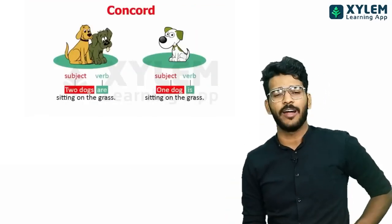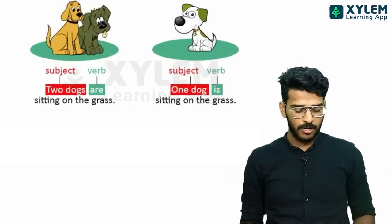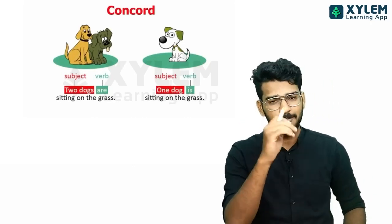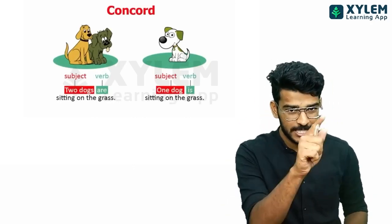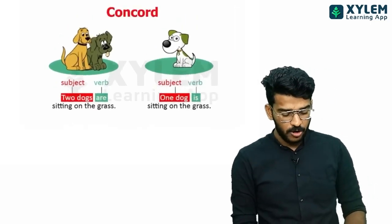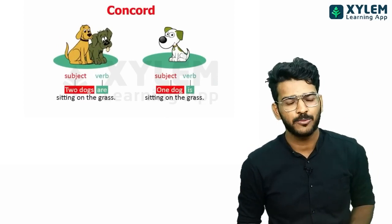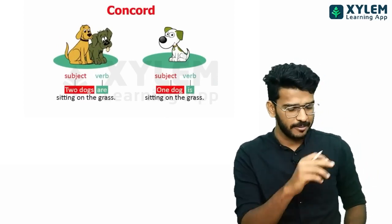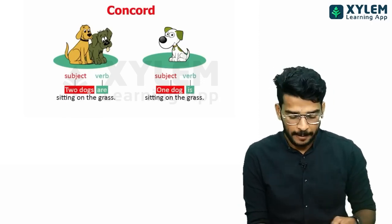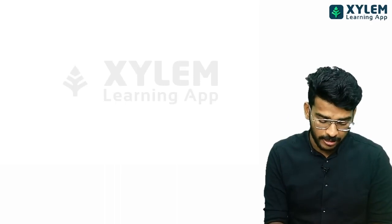Next is the concord — we've already studied it. Subject and verb must agree. The two dogs are plural. One dog is singular. That's an easy trick. In simple present tense, singular third person — he, she, it — takes an -s on the verb.